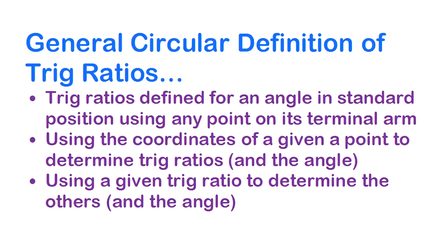We're going to look at broadening our definition of trig ratios for angles in standard position, moving from one that involves definitions of the ratios in terms of points on a unit circle to one that allows us to use the coordinates of any given point to determine trig ratios and the angle.